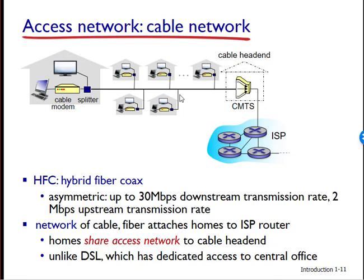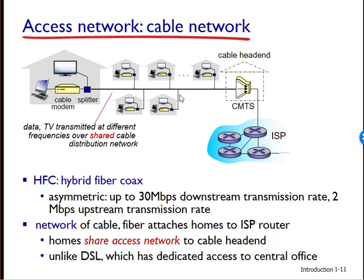Verizon has been particularly aggressive with fiber with its FIOS service. The simplest optical distribution network is called Direct Fiber, with one fiber leaving the central office for each home. More commonly, each fiber leaving the central office is shared by many homes. It's not until the fiber actually gets close to the house that it's split into individual customer-specific fibers. There are two competing optical distribution network architectures that perform this splitting.